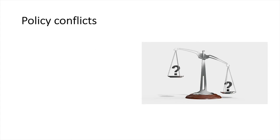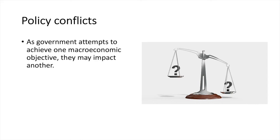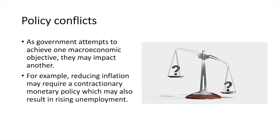Finally, there are numerous policy conflicts that exist, covered in detail in the previous video. As the government attempts to achieve one macroeconomic objective, they may impact another. For example, reducing inflation may require a contractionary monetary policy, which may also result in rising unemployment due to the fall in output.